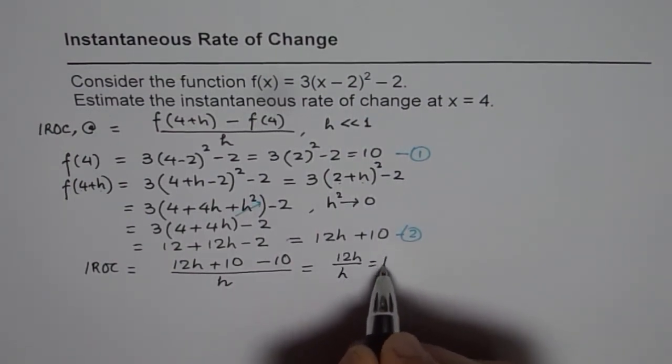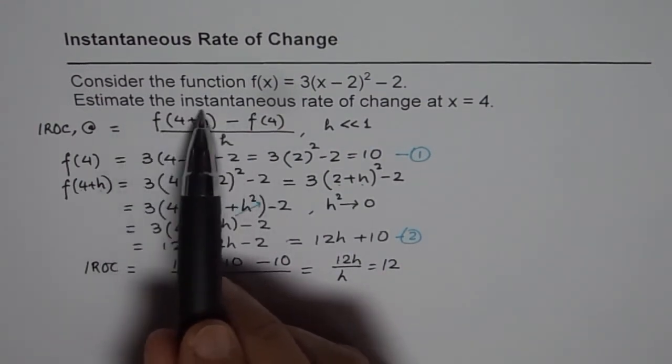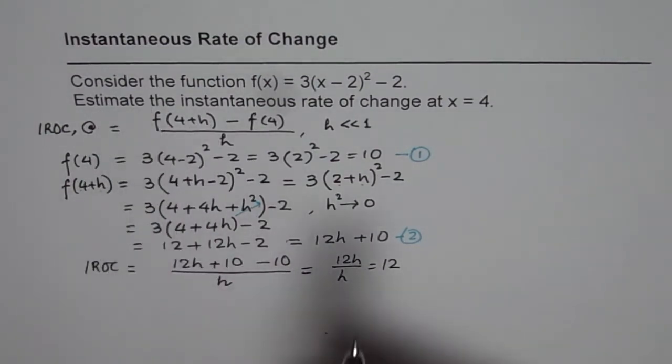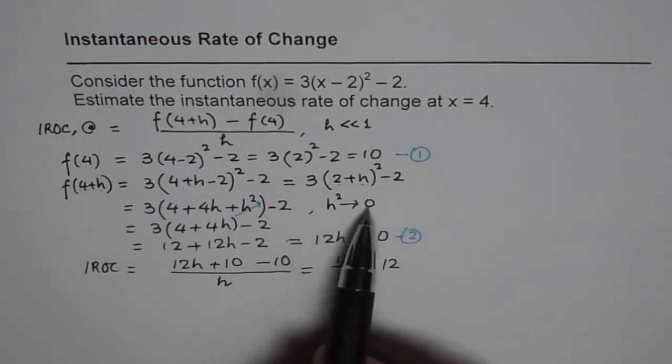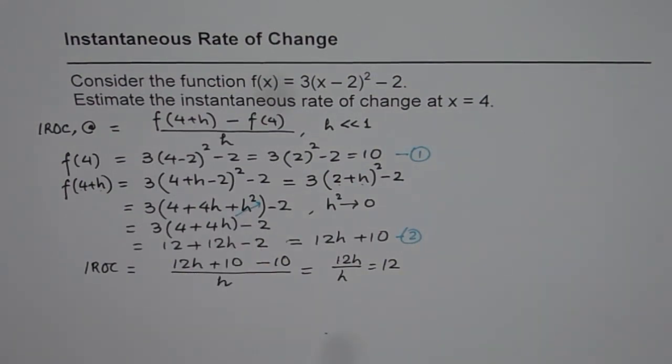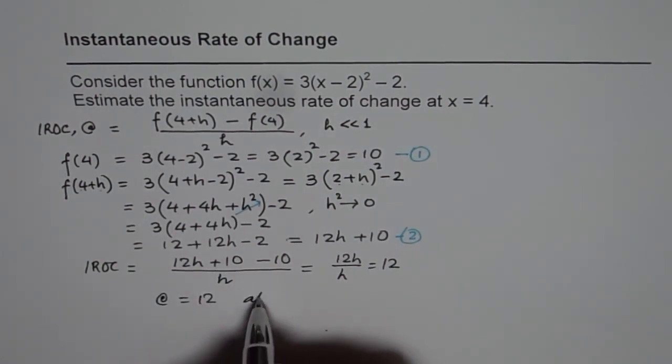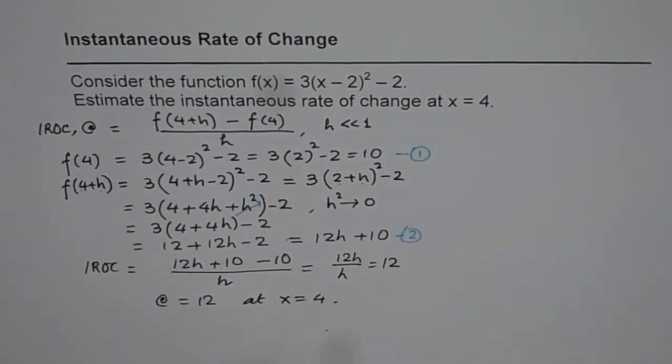You get the idea. And therefore you can say that the estimated value, why it is estimated since we approximated, now if you don't put h² as 0 we could get this answer to 2 or 4 decimal places depending on value of h. So the estimated value of instantaneous rate of change is 12 for us at x = 4. Thank you.